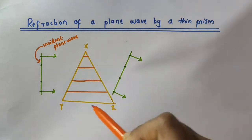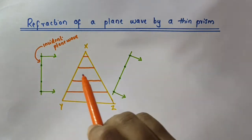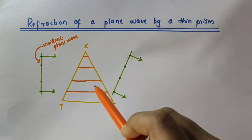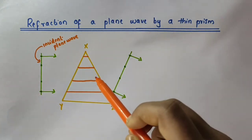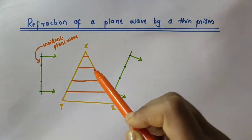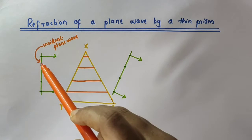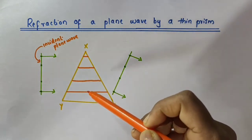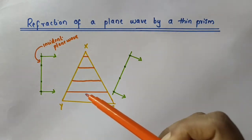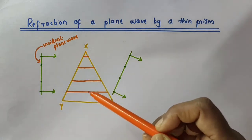Consider a very thin prism XYZ. Let this be a plane wave incident and passing through the thin prism. When this plane wave front passes through the prism, we know that the speed of the wave decreases — that is, the speed of light waves is less in glass. The incident wave front has to travel through different distances, or different thicknesses, of the prism.